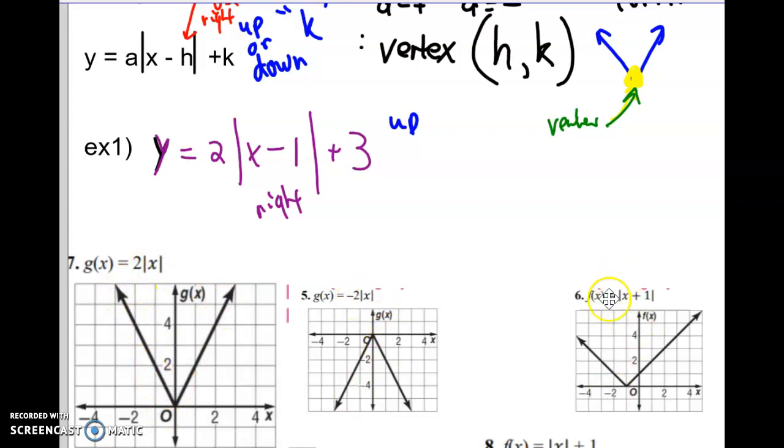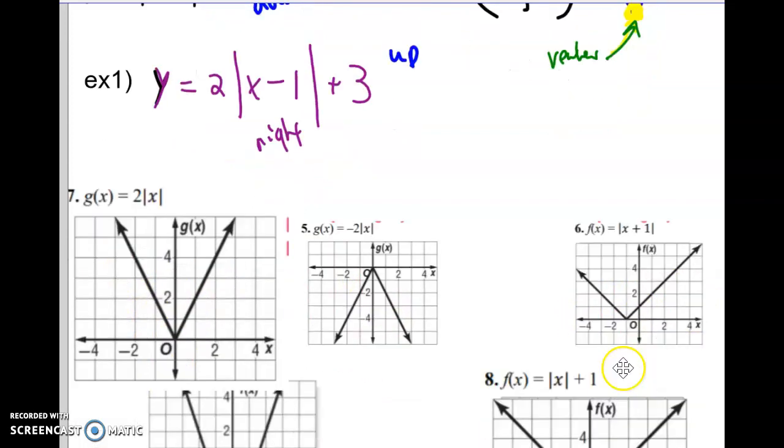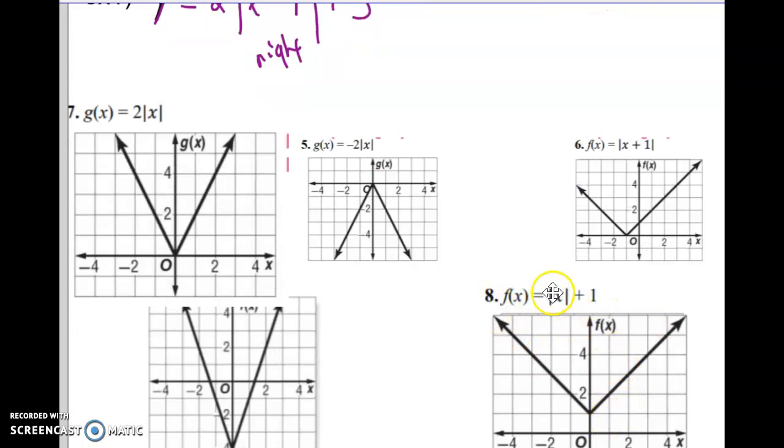The front number tells you if it opens up or down. Look at these examples: 2 opens up, negative 2 opens down. Positive numbers in front open up, and so on.